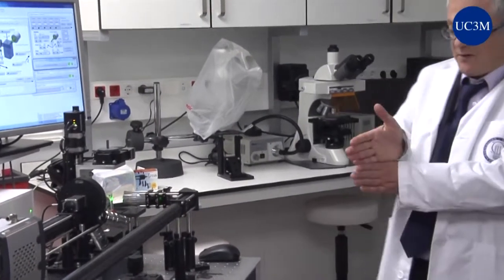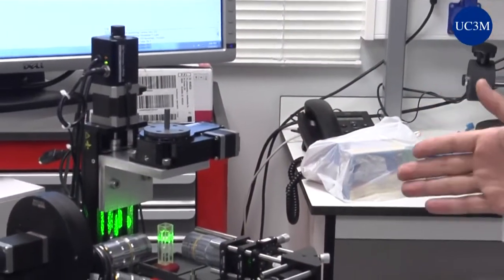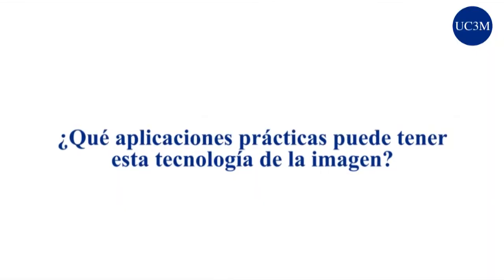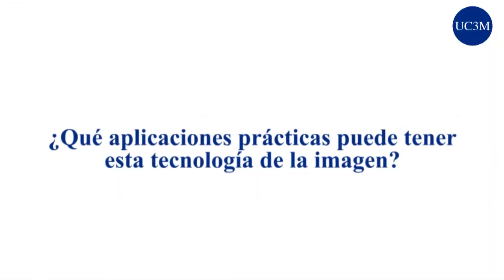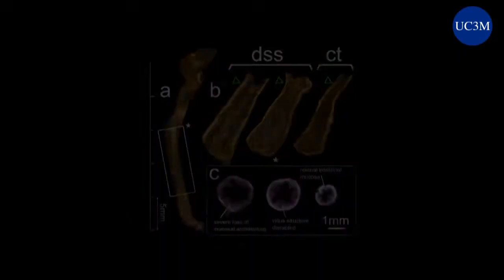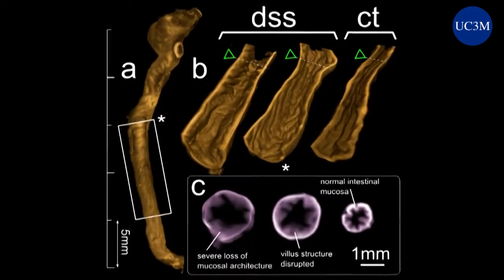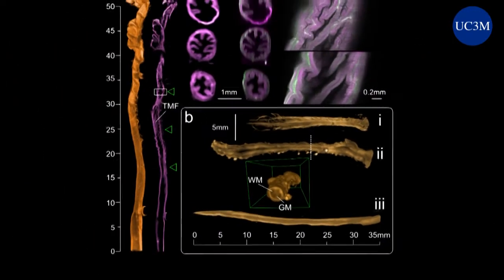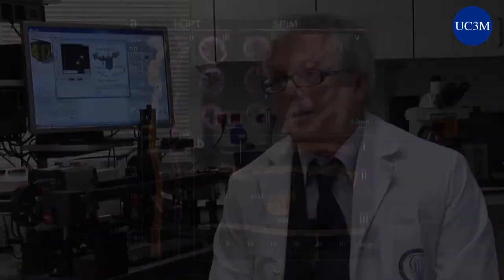¿Qué es lo que consiste en generar un haz de luz plano y mover la muestra a través de este haz de luz y con esta información obtener una imagen tridimensional de una muestra de un organismo vivo? Sobre todo para estudios de desarrollo básicos en organismos como la mosca de la fruta o el pez cebra, donde hay muchísimos estudios que luego son traslacionales y aplicables al ser humano.